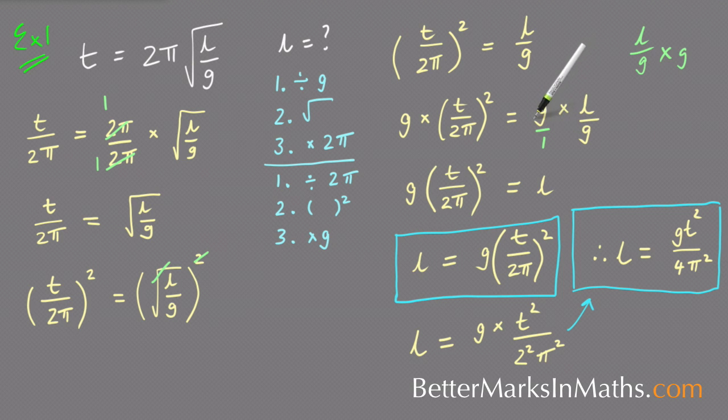And then you go G into G goes once. G into G goes once. L divided by 1 is L. 1 divided by 1 is 1. 1 times L is L. Or you could go 1 times L is L. 1 times 1 on the bottom is 1. L divided by 1 is L. Either way, you get L.